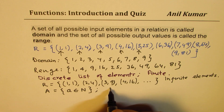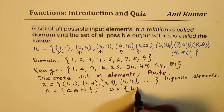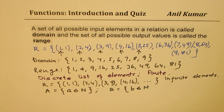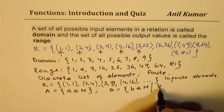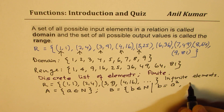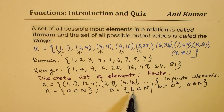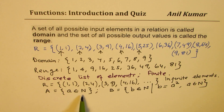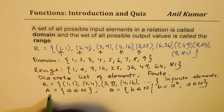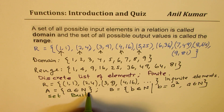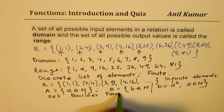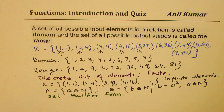For set B, we can write: b belongs to the set of natural numbers where b = a² and a belongs to the natural numbers. This notation — where b is an infinite series of squares — is called set builder form. This is an introduction to how we represent relations, their domain, and range in set notation.